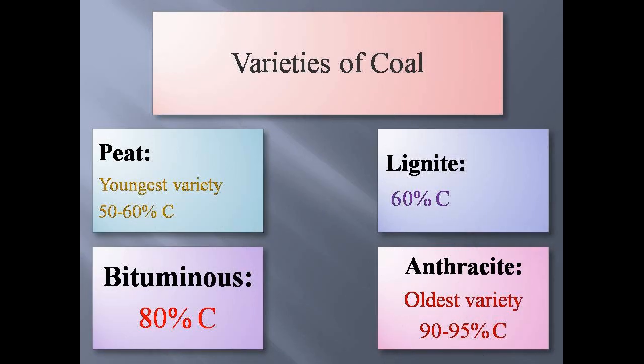There are mainly four varieties of coal: peat, lignite, bituminous, and anthracite. Peat is the youngest variety of coal and anthracite is the oldest variety. Peat has the lowest carbon content, that is 50 to 60 percent, and anthracite has the highest carbon content, which is 90 to 95 percent.